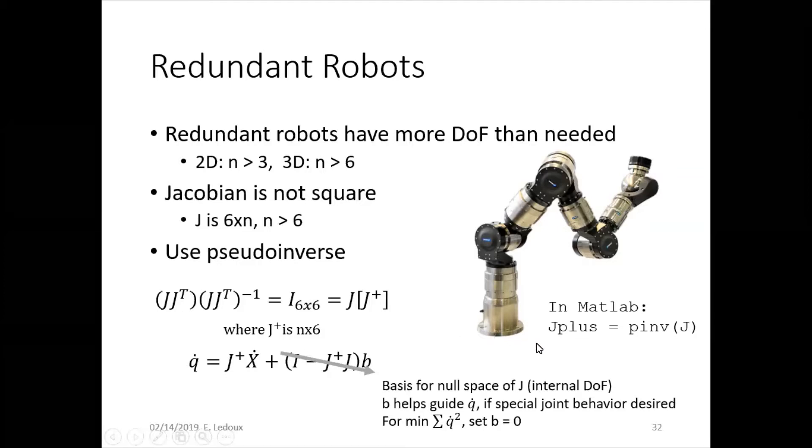In MATLAB, you can use this pseudo inverse formula if you want, or you can use their built-in function. It's just called PINV of J. Now, this second term out here with the arrow through it, this helps to guide the joint velocities if you want a special joint behavior.